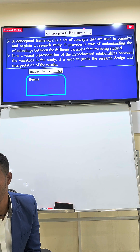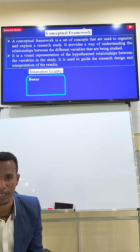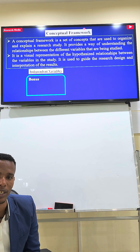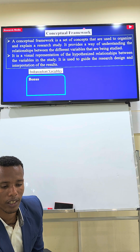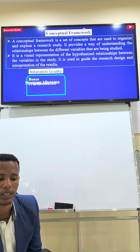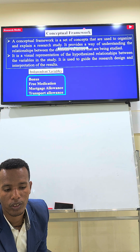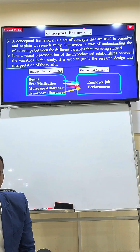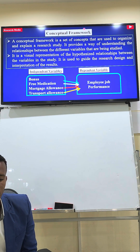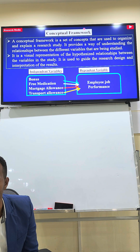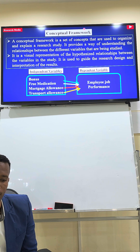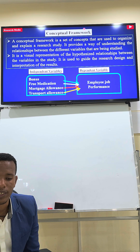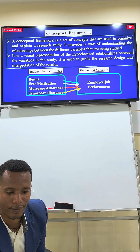This is the research title. To be able to address the data, information is used. The specific objective is used to make a research test. The dependent variable is employee job performance, and we can use formulae to write the bonus linked to employee job performance.